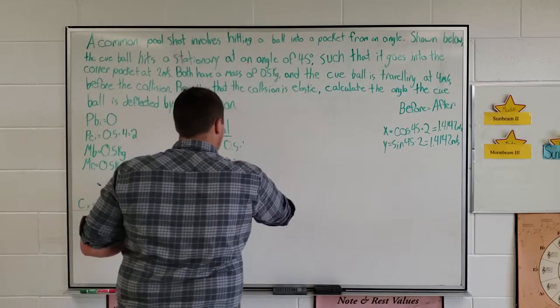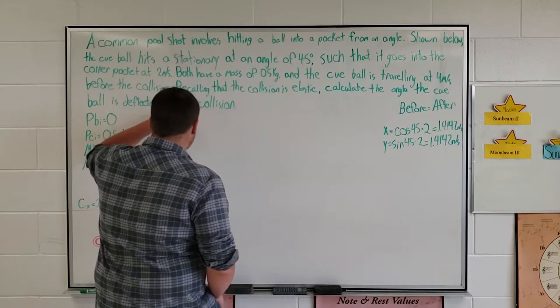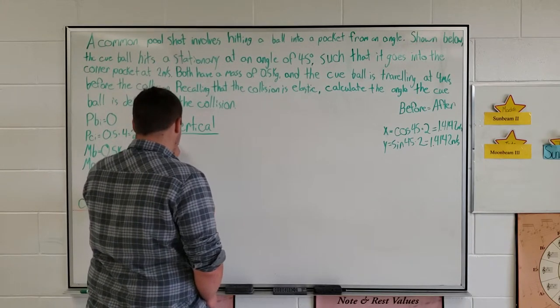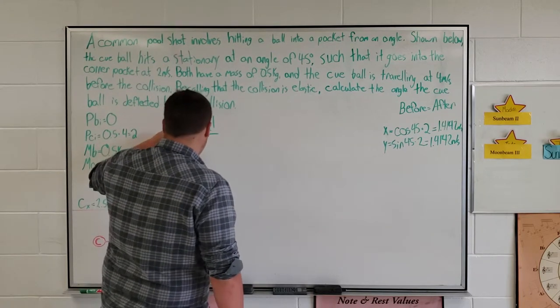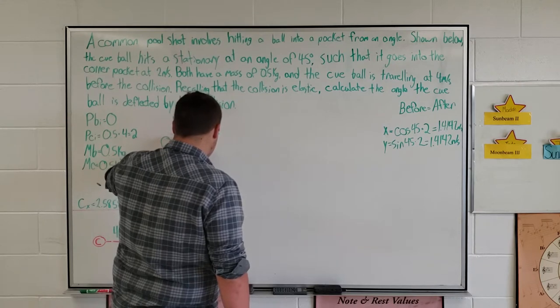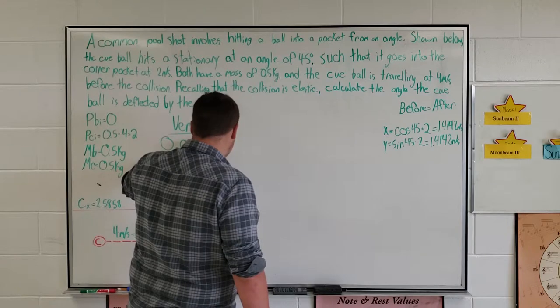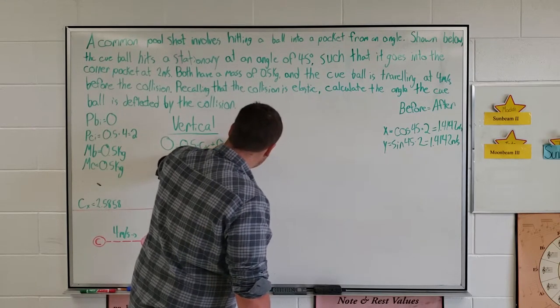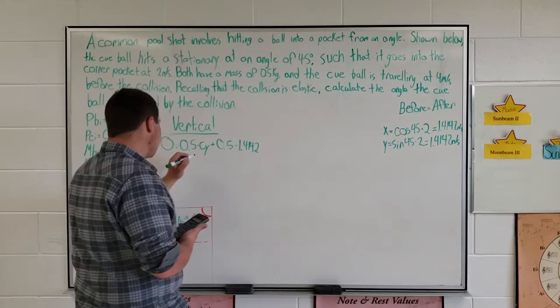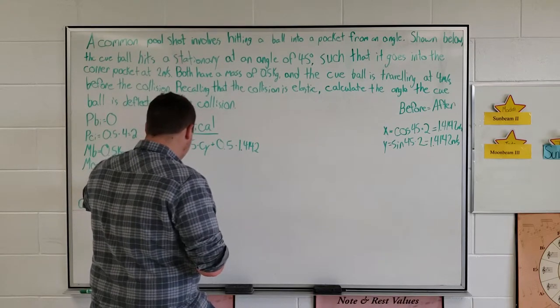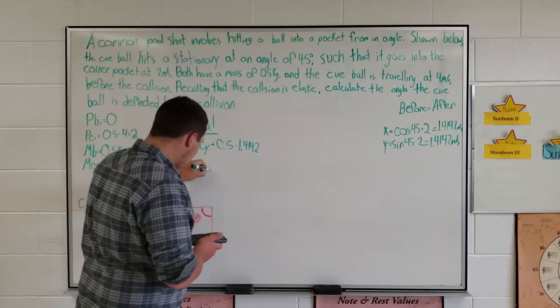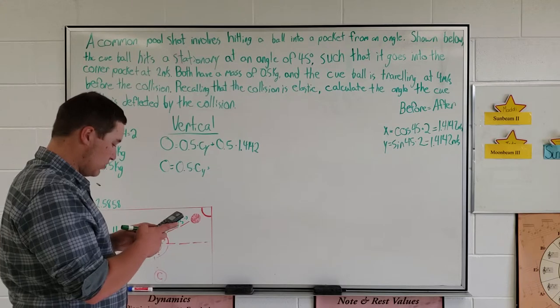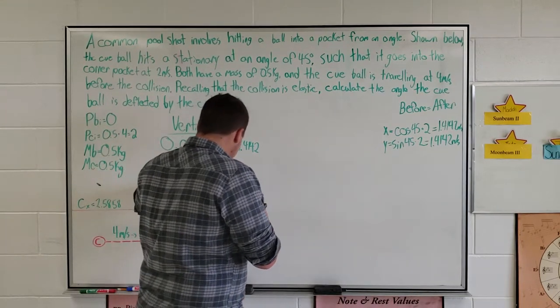Now we want to do the same thing only with the vertical components. To start, we have 0 vertical momentum initially. Again, it's equal to the mass of C times Cy plus the mass of B times 1.4142. We want to isolate Cy. So 0 equals 0.5 times Cy plus 0.5 times 1.4142, which equals 0.7071.